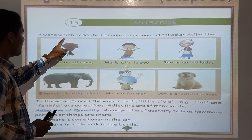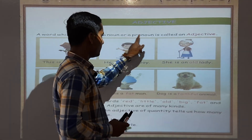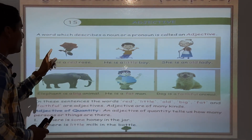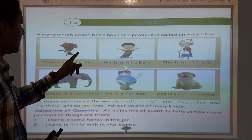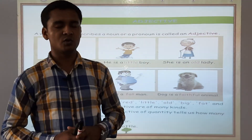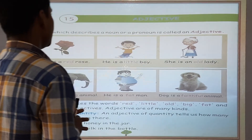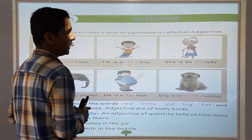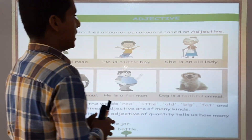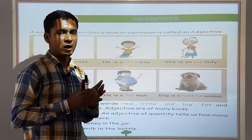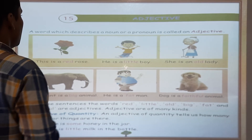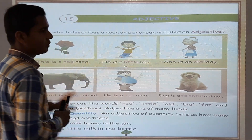A word which describes a noun or a pronoun is called an Adjective. Yeh aapka definition hai — a word which describes a noun or a pronoun is called an Adjective. Woh aisa shabd jo noun or pronoun ko describe kare, usko hum log Adjective bolte hain. Ek aisa shabd jo noun or pronoun ko describe kare, woh Adjective kehlaata hai. Ab hum log example ke zariye isko samjhenge.